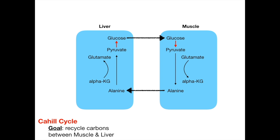The red arrows on this slide show gluconeogenesis in the liver going from pyruvate up to glucose, and glycolysis in the muscle going down from glucose to pyruvate. It's really the glucose and alanine that move between liver and muscle to bring pyruvate across. We do this because pyruvate is a carbon molecule and we need to move those carbon molecules around. The Cahill cycle is the constant conversion from pyruvate to alanine, alanine back to pyruvate, pyruvate to glucose, and glucose back to pyruvate, while regenerating glutamate and alpha-ketoglutarate as cofactors.